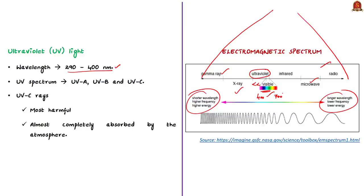The ultraviolet spectrum is commonly divided into three types based on wavelength: ultraviolet A, ultraviolet B, and ultraviolet C. Among these three, ultraviolet C rays are the most harmful and are almost completely absorbed by the atmosphere.